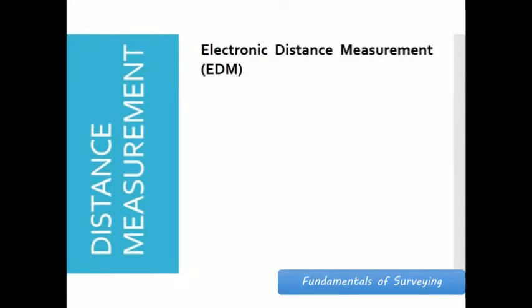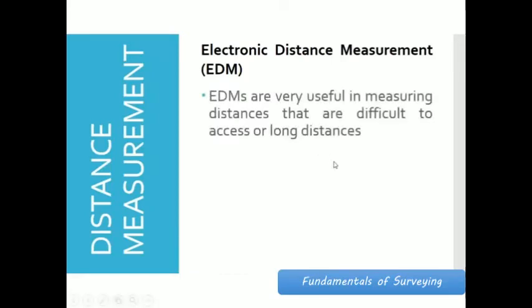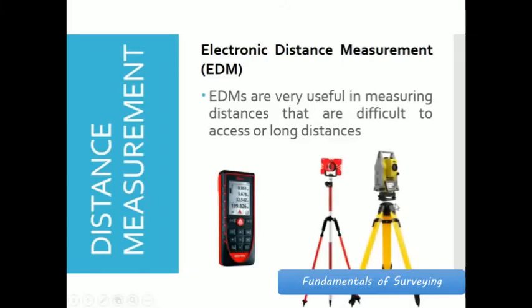When accuracy is important, surveying instruments with electronic distance measurement capability will give you more accurate results compared to steel tape. Another advantage of EDMs: they are very useful in measuring distances that are difficult to access or very long in distance. Unlike steel tape which is limited to maximum length, electronic distance measurement has a longer range. Here are examples: we have laser distance meter, total station, and RTK or GNSS with GPS feature for finding distance.